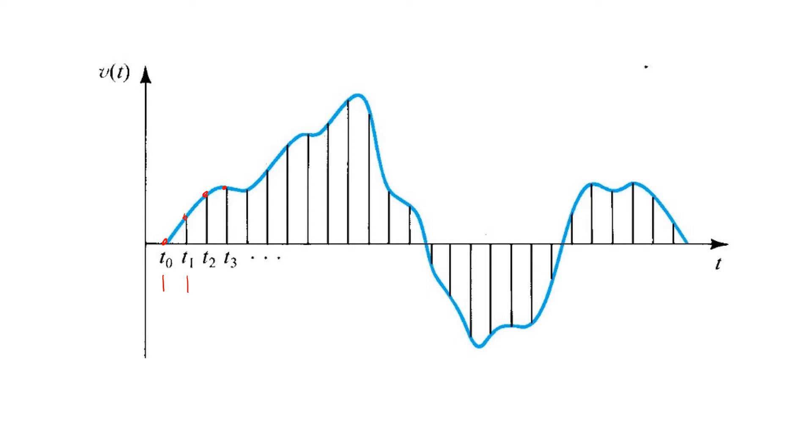Now, because V can still take on any value, it's still an analog signal. But it's now represented in discrete time.